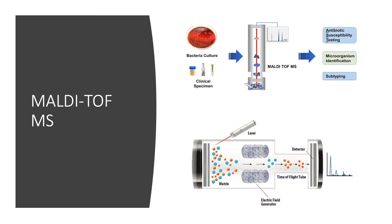The matrix containing crystallized proteins is found on the metal plate at the bottom of the MALDI-TOF machine. A laser is directed at the crystallized matrix, separating the different proteins. An electrical field generator then accelerates these proteins into a time-of-flight tube. At the end of the tube, a detector measures how long it takes for the proteins to pass through and their mass-to-charge ratio. This is plotted into a graph where each peak corresponds to a different protein or group of proteins. These peaks are compared to a database to identify the microorganism. MALDI-TOF MS can be used for antimicrobial susceptibility testing, microorganism identification, and even subtyping of different species.